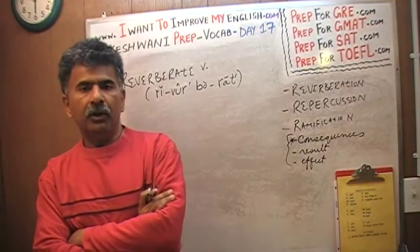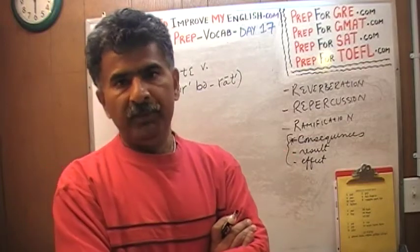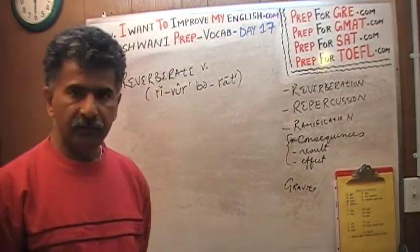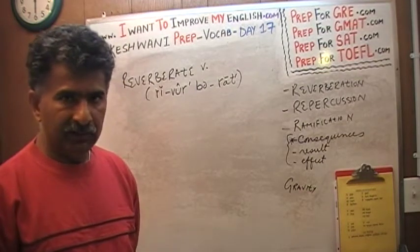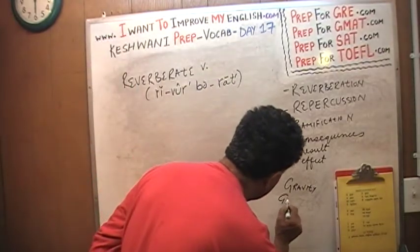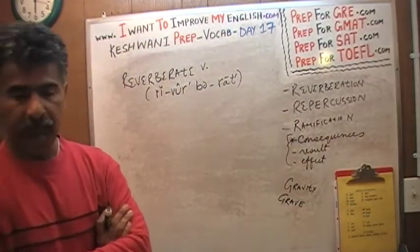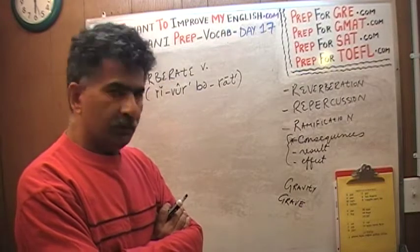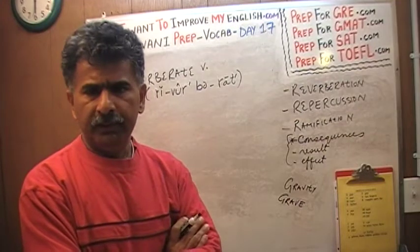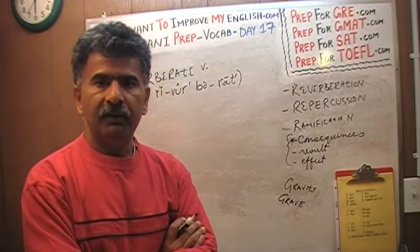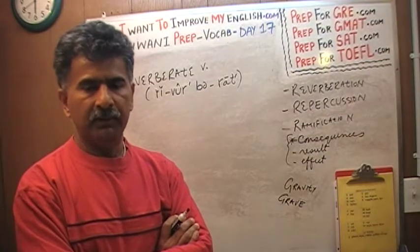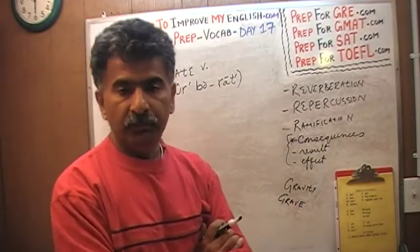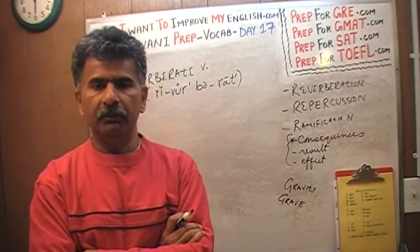Sometimes you may have heard someone warn you by saying there will be consequences of utmost gravity. Gravity is a tricky word — it has two meanings. First, gravity as in Newton. The second meaning has to do with the word grave. Grave also has two meanings: a place where you bury a dead person, and the second meaning is serious. If someone says it's a grave matter, it's a serious matter. And therefore, gravity means seriousness. So 'repercussions of utmost gravity' means very serious consequences.